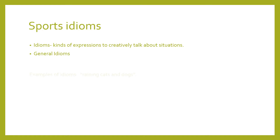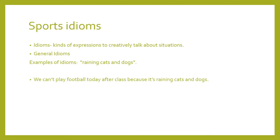Here are some basic general idioms you probably already know, just to explain what we mean. First: 'raining cats and dogs.' For example: 'We can't play football today after class because it's raining cats and dogs.' It means it's raining really hard — so much rain that everything is coming down, even cats and dogs.